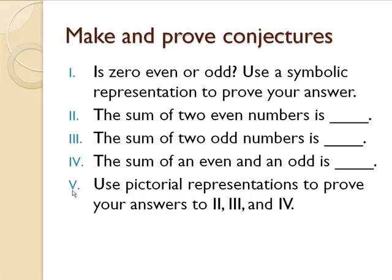I'd like for you to make and prove some conjectures. The first one is 0, even or odd. And I'd like for you to use a symbolic, algebraic representation to prove your answer. I'd also like for you to determine if the sum of two even numbers is even or odd. And the same with the sum of two odd numbers, an even and an odd. And I'd like for you to use pictorial representations, those things the Greeks would use with the columns of dots, to prove your answers to 2, 3, and 4.